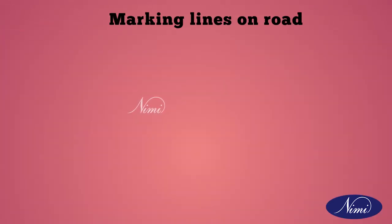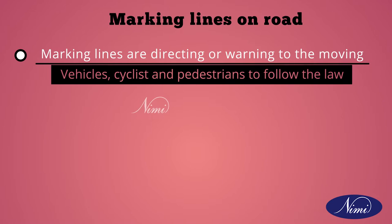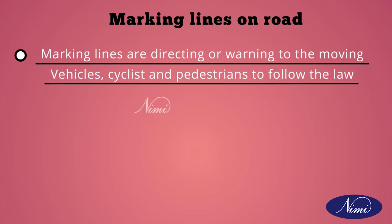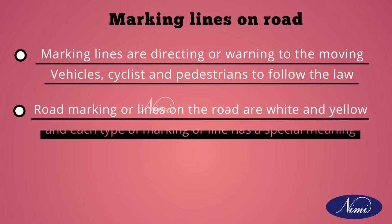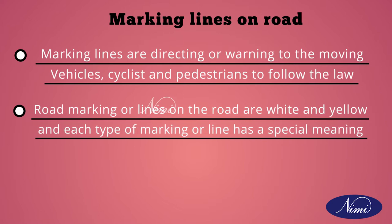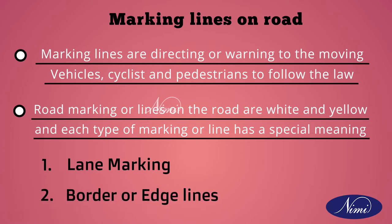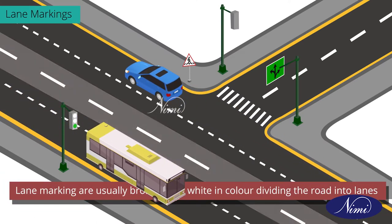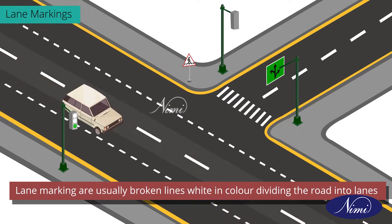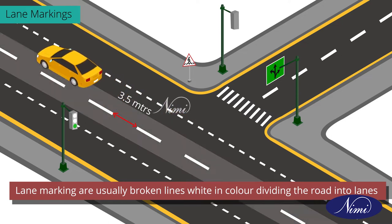Road markings or lines on the road are directing or warning to moving vehicles, cyclists and pedestrians to follow the law. Road markings are white and yellow, and each type of marking or line has a special meaning. There are two types: lane markings and border or edge lines. Lane markings are usually broken white lines dividing the road into lanes, normally each having 3.5 meters distance.